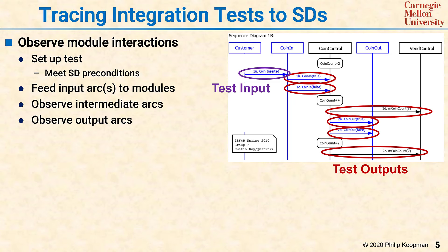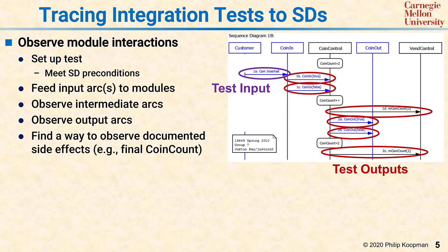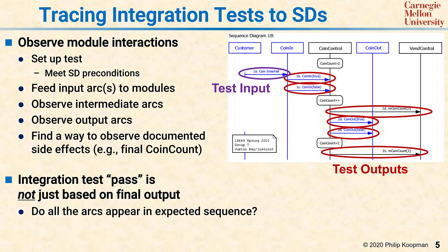Simply looking at the final coin count of two is not how you determine pass-fail for this integration test. This integration test only succeeds if it notices it has an extra coin and it refunds the extra coin instead of just silently eating it, and then goes back to the right number of coins. Only observing the final test output would not tell you whether it actually refunded the coin, which is the whole point of this sequence diagram. What this example illustrates is that integration test is not simply a pass on the final output, but rather did all the arcs appear in the expected sequence, did all the timings happen as expected, did all the side effects happen as expected — it's that they manage to work together exactly as they're supposed to according to the high-level design.